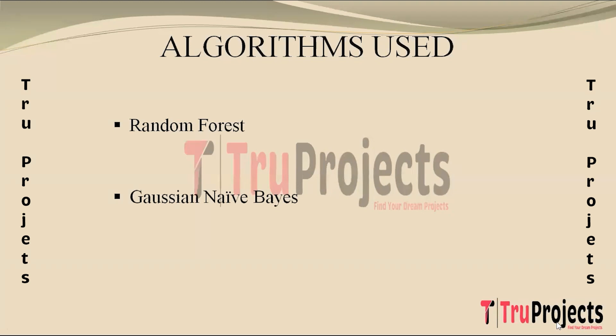The next algorithm is Gaussian Naive Bayes. It is a classification algorithm based on Bayes' theorem assuming feature independence and following a Gaussian distribution. It calculates the conditional probability of a class given input features and selects the class with the highest probability. This approach is well suited for text classification tasks like detecting cyber harassment due to its ability to handle high-dimensional data efficiently and perform effectively even with small datasets.